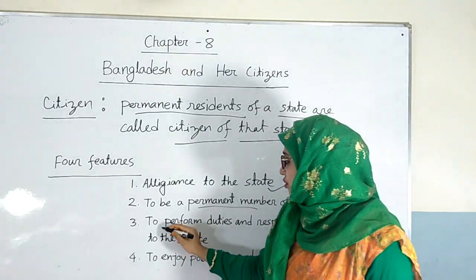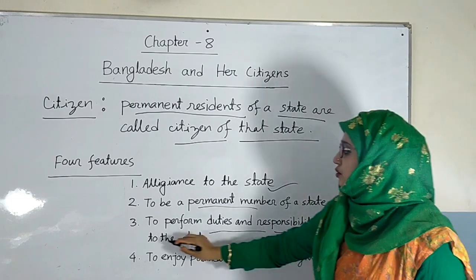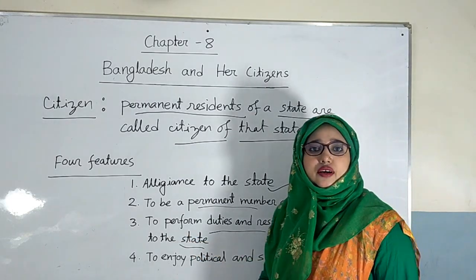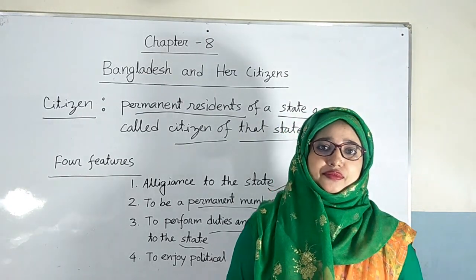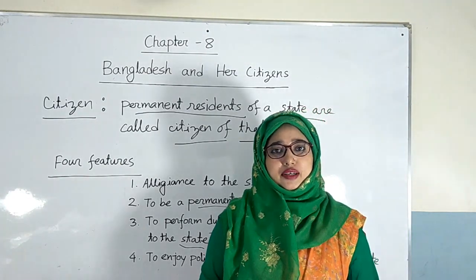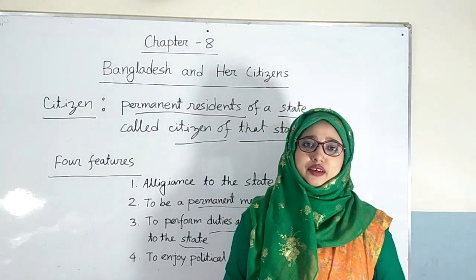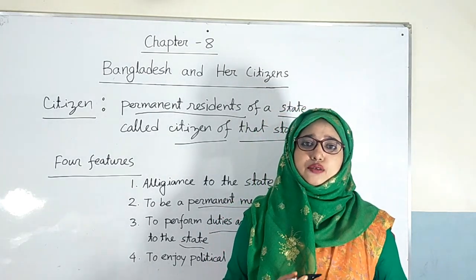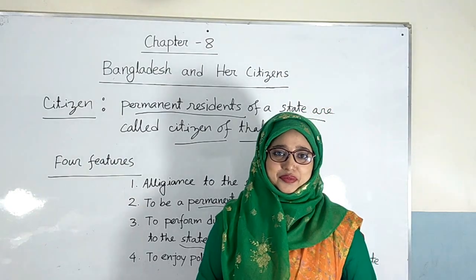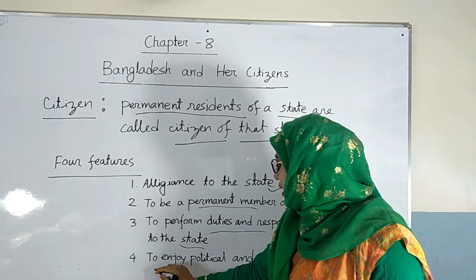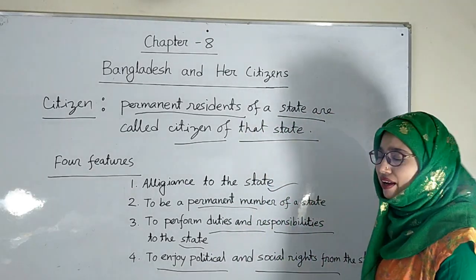Number three, to perform duties and responsibilities to the state. Every citizen has some responsibilities to the state, and he or she must follow the rules and regulations of his or her state. Number four, to enjoy political and social rights from the state.